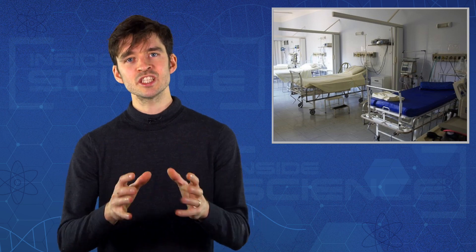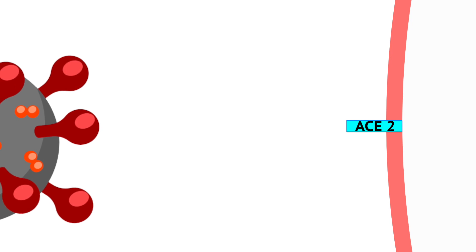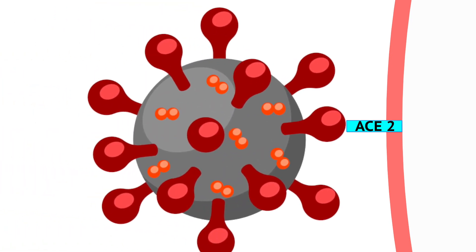Two changes stand out. Mutation N501Y changes how the coronavirus attaches to the body's cells. It basically makes the virus stickier to its target ACE2 receptor on the cell's surface. It does this by altering the structure of the viral spike protein.